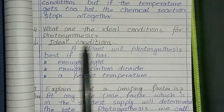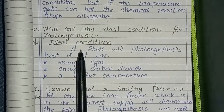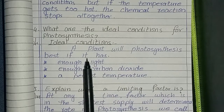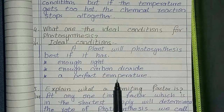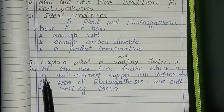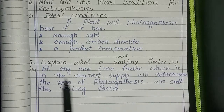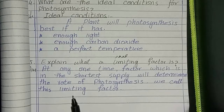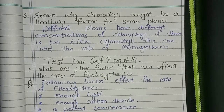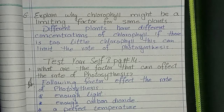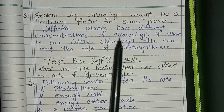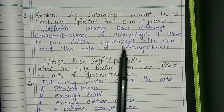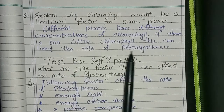What are the ideal conditions for photosynthesis? A plant will photosynthesize best if it has enough light, enough carbon dioxide, and a perfect temperature. Explain what a limiting factor is. At any one time, the factor which is in the shortest supply will determine the rate of photosynthesis — we call this the limiting factor. Explain why chlorophyll might be a limiting factor for some plants. Different plants have different concentrations of chlorophyll. If there is too little chlorophyll, this can limit the rate of photosynthesis.